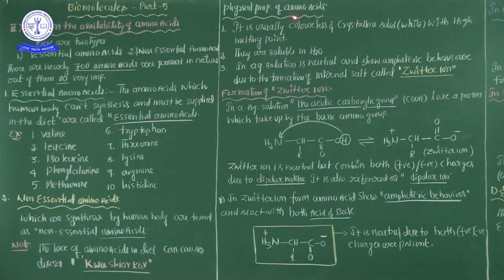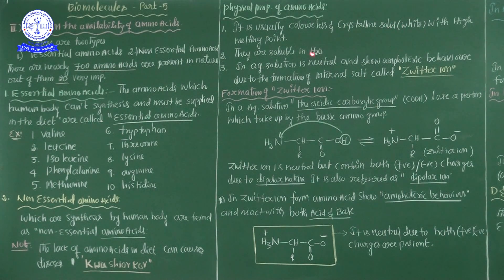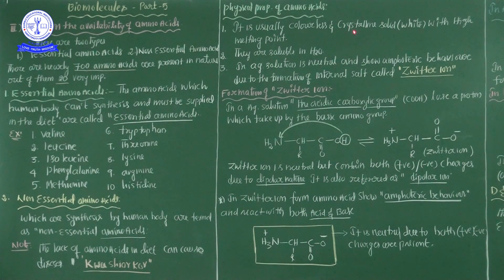Next, the physical properties of amino acids. Around 700 amino acids are present in nature, out of which 20 are important. Physical properties of amino acids: first, they are usually colorless and crystalline solids — white colored crystalline solids with high melting points. This is very important: amino acids are colorless crystalline solids with high melting points.